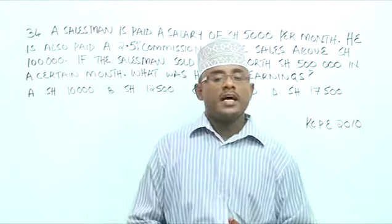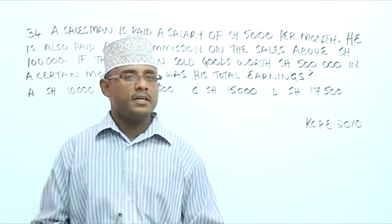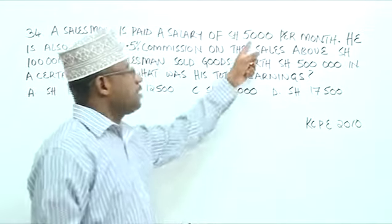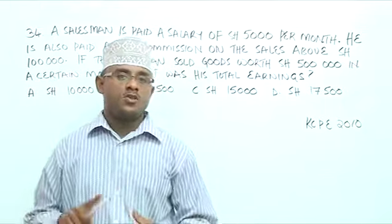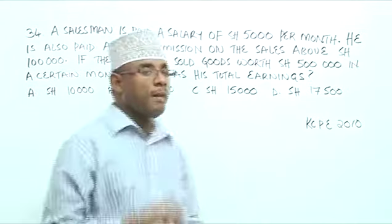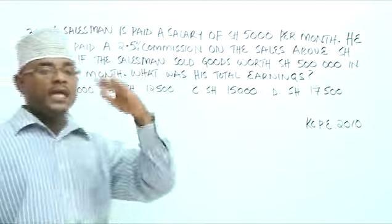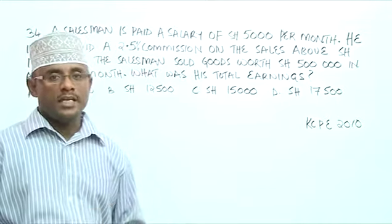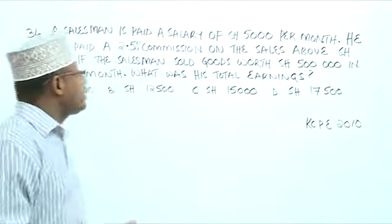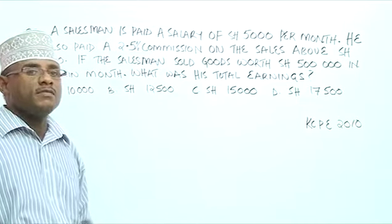Now, the salesman earns, at the end of the month, two things. First, his salary, and we're told it is $5,000. Secondly, it is commission, but he only gets commission when he sells goods above $100,000. $100,000 and below, he does not get any commission. And what is the rate for commission? 2.5% on sales above $100,000.